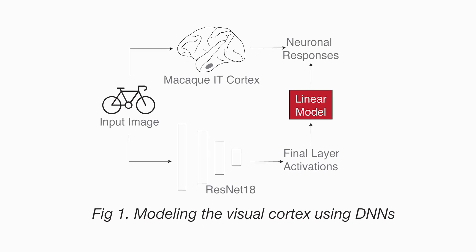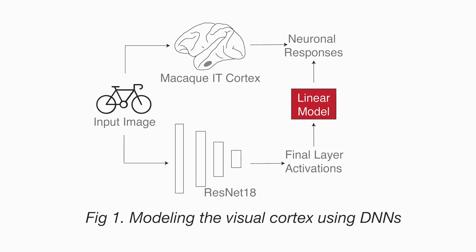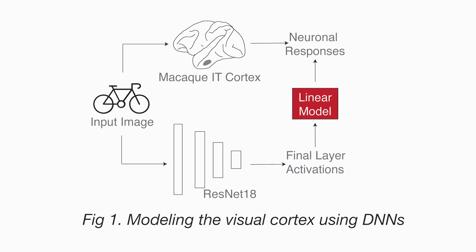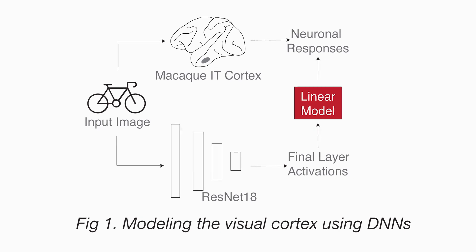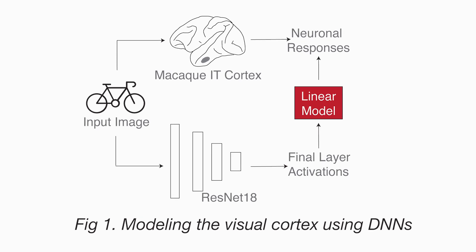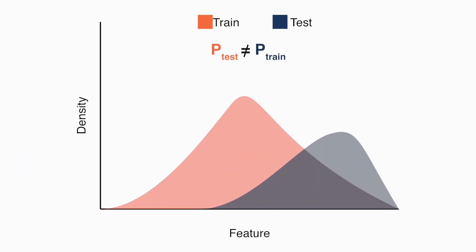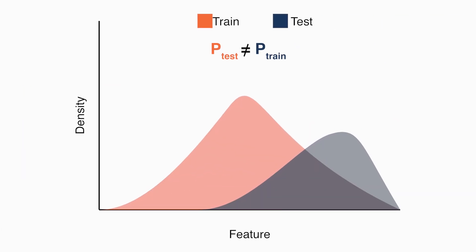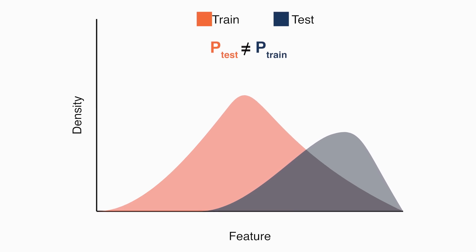Most modern models of the brain rely on deep neural networks. However, from AI research, we know that these models don't really work very well with respect to out-of-distribution data. That is to say, they work very well on the data they've been trained with, but they don't generalize to data that's very different from it.